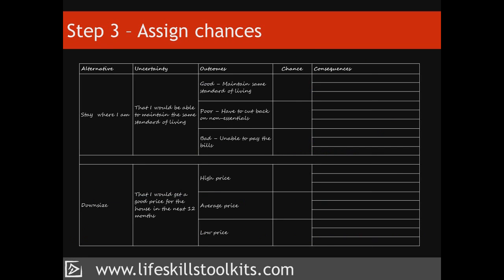Franny looks at each of the outcomes for her first alternative – to stay where she is. Thinking about the monthly income from her new business and her alimony, and comparing these against her monthly bills and outgoings, she realises the chances of a good outcome are poor. While her business shows promise, it won't make her sufficient money quickly enough for income to match or exceed outgoings. Based on these thoughts, Franny estimates a 5% chance of a good outcome, a 30% chance of a poor outcome, and therefore a 65% chance of the bad outcome. Although depressing to think about, this figure feels right to Franny.